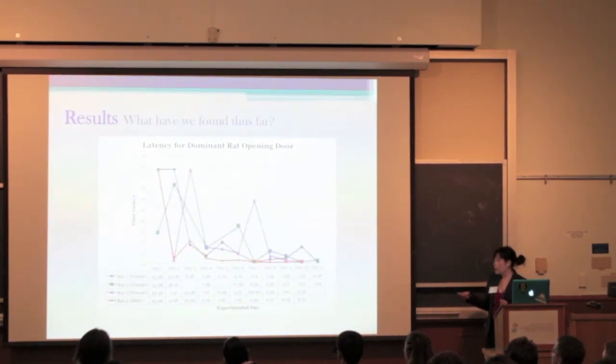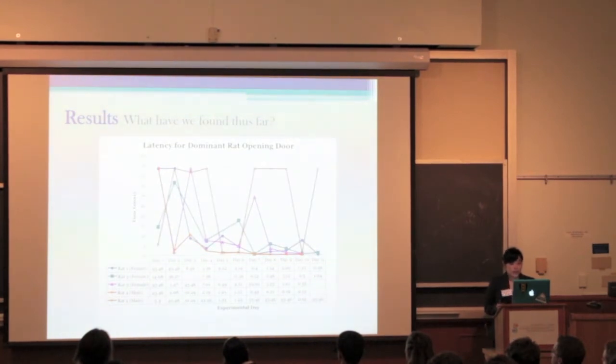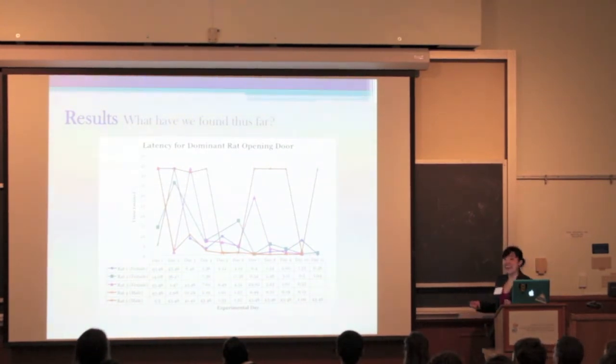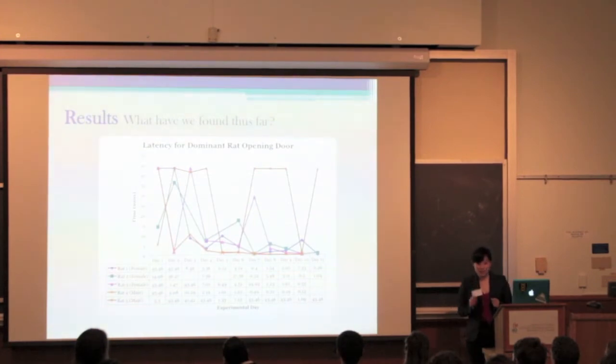Rats two, three, and four follow a similar pattern. But this fifth rat, for whatever reason, either opened the door immediately or not at all during the trial period. Yeah, that was fun. This makes him a good candidate for optogenetics, but I'll explain that in a little bit.